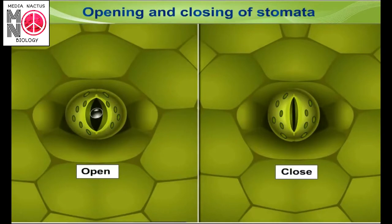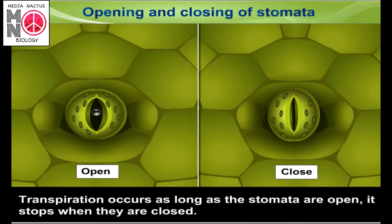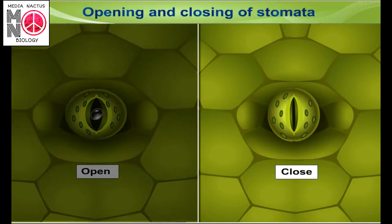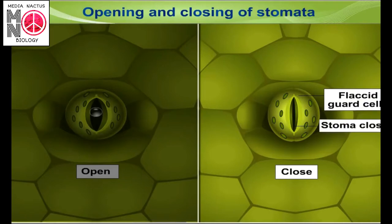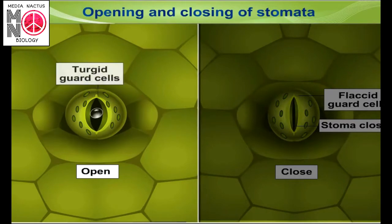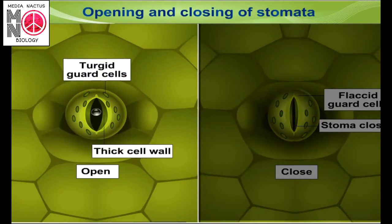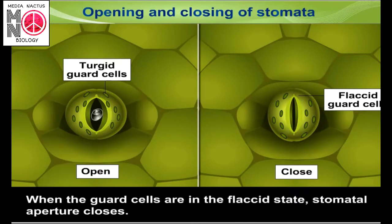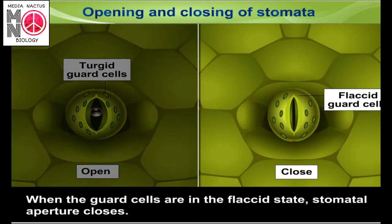Mechanism of opening and closing of stomata: transpiration occurs as long as the stomata are open; it stops when they are closed. The opening and closing of stomata depend upon the turgid or flaccid state of guard cells. When the guard cells are in the flaccid state, the stomatal aperture closes.